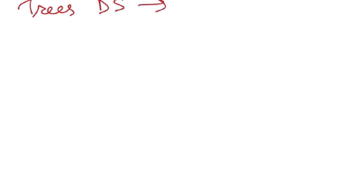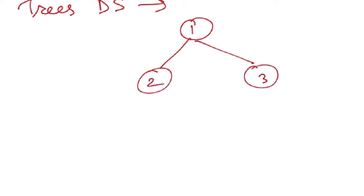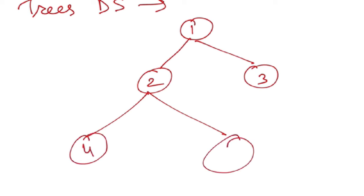Similar to a graph, a tree is also a collection of vertices and edges, but in a tree there can only be one edge between two vertices. Its structure looks like branches on a tree. There are many types such as binary tree and binary search tree, which we'll cover as we progress.